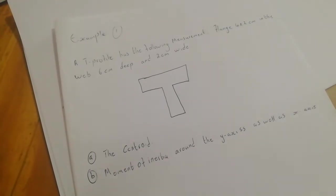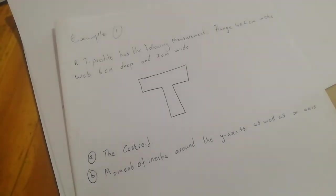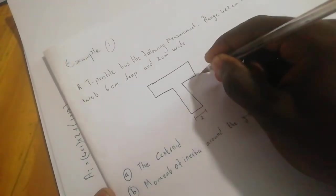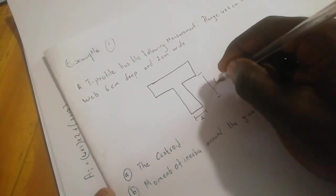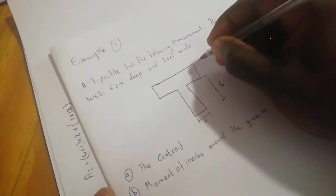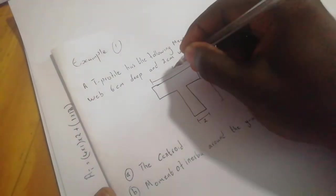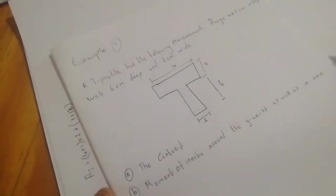We have a T-profile with the following measurements: it has a flange of four by two centimeters, and then the web is six centimeters deep and two centimeters wide. So the web is two centimeters wide and six centimeters deep, and the flange is four by two.